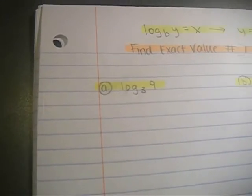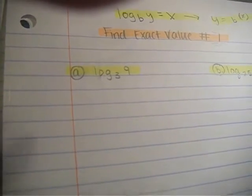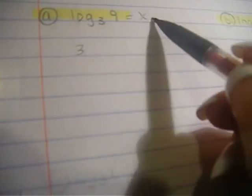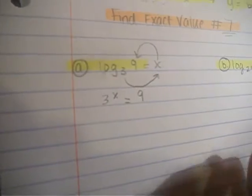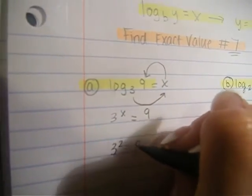Now for the first problem, we have our base of 3. What I like to do is take the 3, and how I like to look at this is kind of like a clock: 3 raised to what will equal 9? So 3 to the x equals, 3 raised to what equals 9. This is an easy one because we all know 3 raised to the second equals 9.